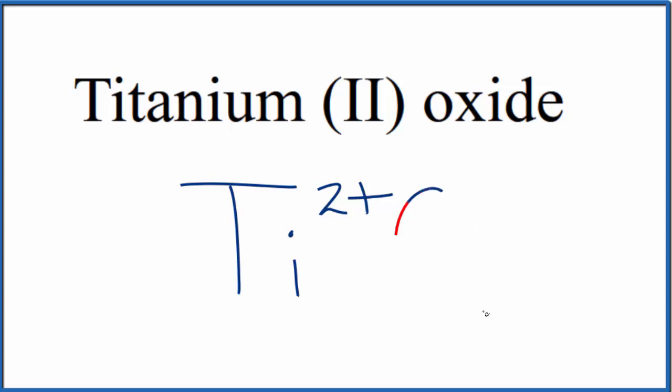Oxide, that's from oxygen, so we just write O. Because titanium is a metal, it's a transition metal, and oxygen's a nonmetal, we need to think about the charge.